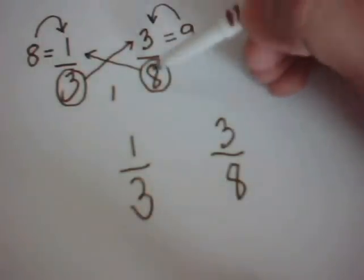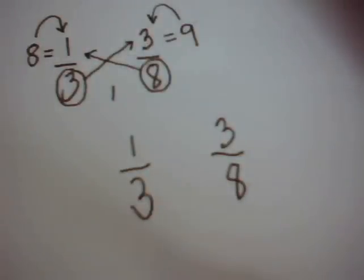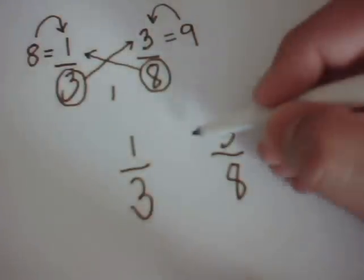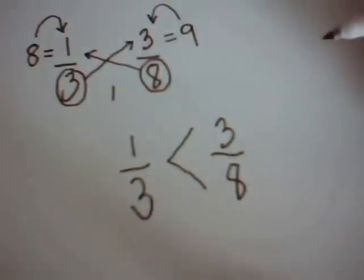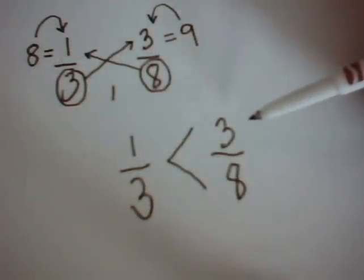Because the 9 represents 3/8 and the 8 represents 1/3, the inequality that goes in here is going to be a less than inequality, where 1/3 is less than 3/8.